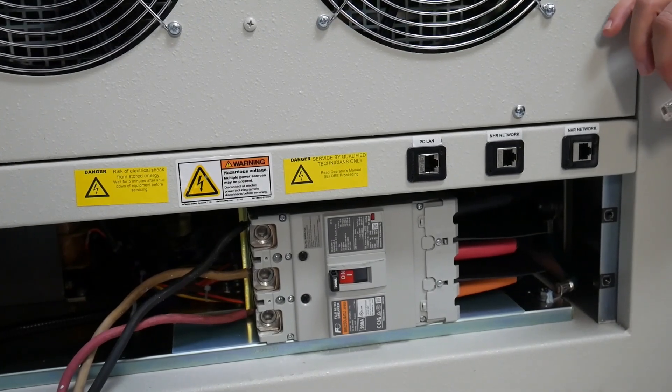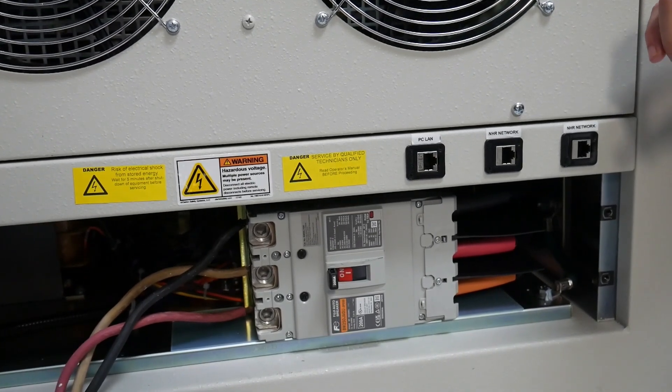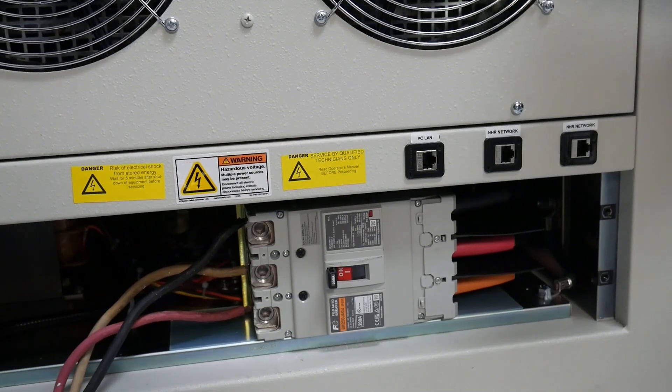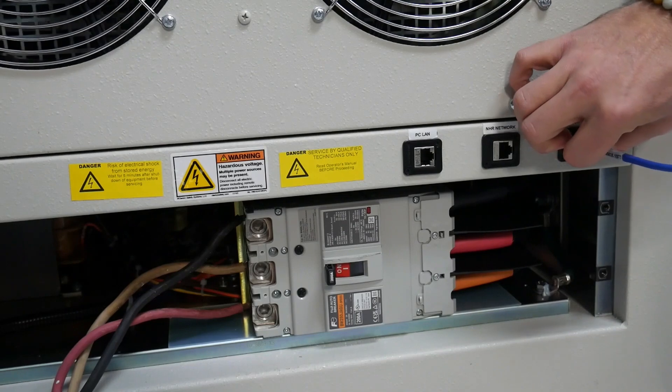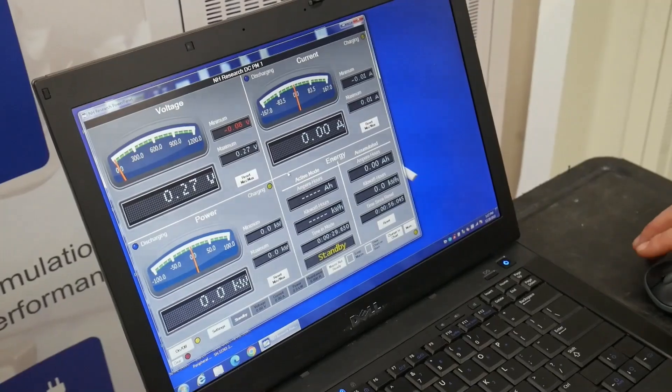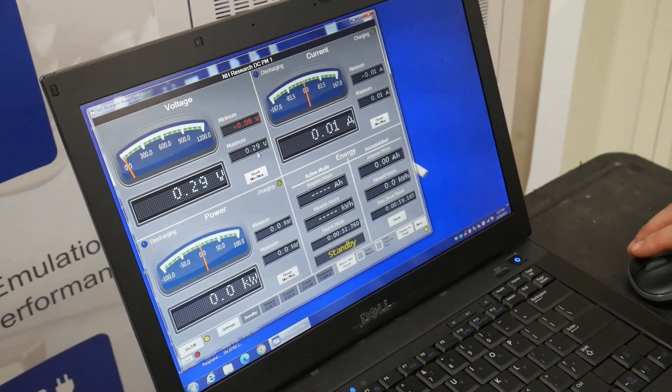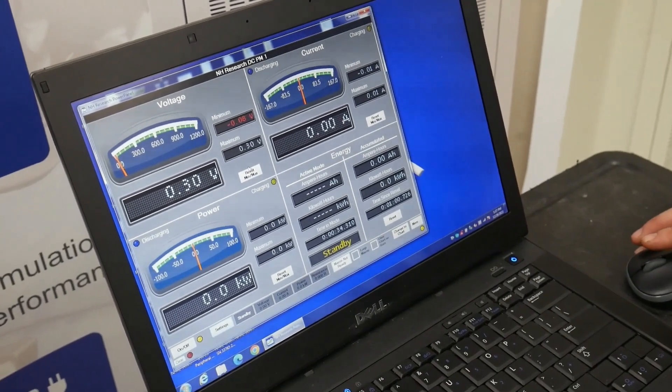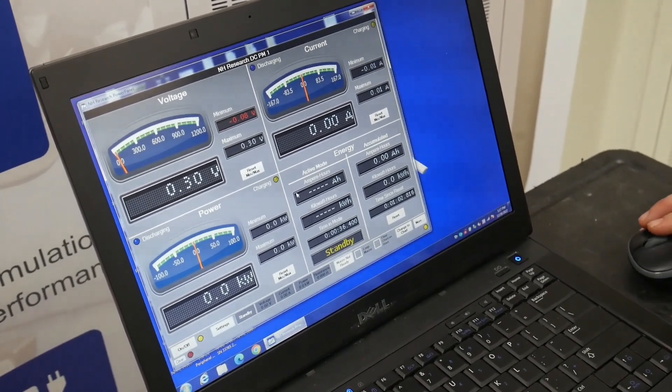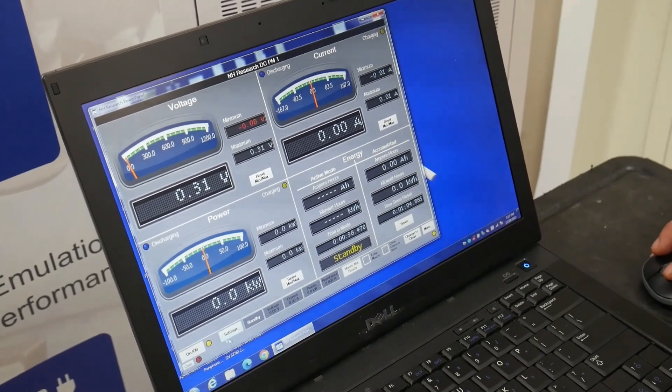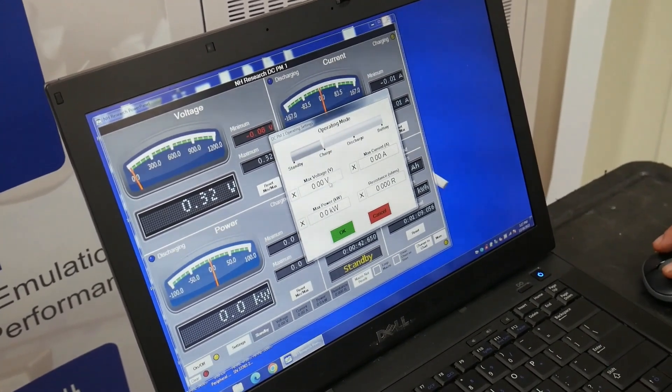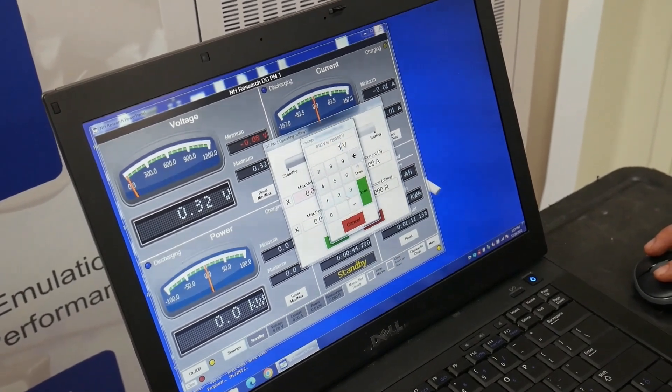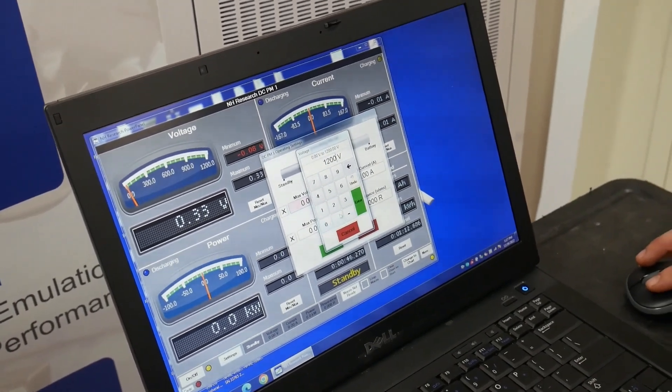Next we'll talk about how to use the unit remotely. The first step is plugging in the ethernet cable into the NH-R network port. After plugging the ethernet cable into my PC and installing the power panel software, I'm able to control the unit remotely and access the same settings as I did on the actual unit.